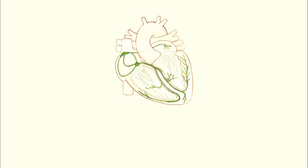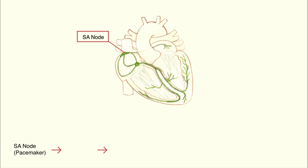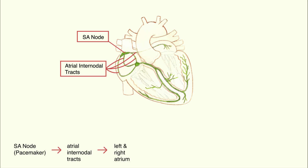In a normal healthy heart, action potentials are initiated in the specialized tissue of the SA node, which serves as the pacemaker. After the action potentials are initiated in the SA node, they spread from the SA node to the right and left atria through the atrial internodal tracts. Simultaneously, these action potentials are conducted to the AV node.